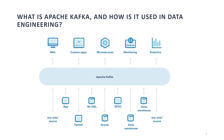What is Apache Kafka and how is it used in data engineering? Apache Kafka is a distributed streaming platform used for building real-time data pipelines and streaming applications. It's used for publishing, subscribing to, storing, and processing streams of records in real-time. Kafka's distributed architecture and fault-tolerant design make it ideal for handling high-volume data streams, enabling data engineers to ingest, process, and analyze data in real-time for use cases such as log aggregation, event sourcing, and real-time analytics.